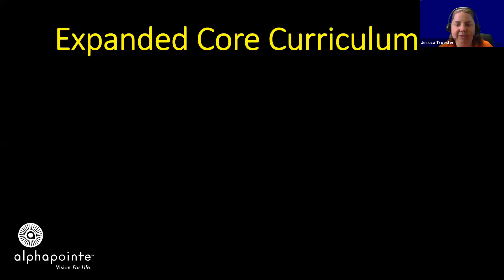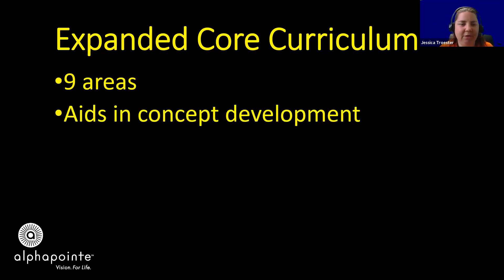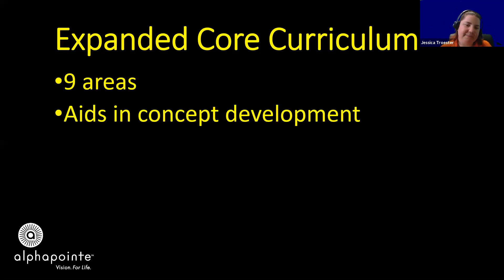The Expanded Core Curriculum is designed to help students with visual impairments, and there are nine areas. The big thing about it is it aids in concept development. Concepts are the overarching idea of something — for example, the concept of computers. Within that concept we have things like laptops, desktops, touchscreens, different brands like Microsoft and Apple. Every single one of those things falls under that umbrella of a computer, but each one is its own unique piece.